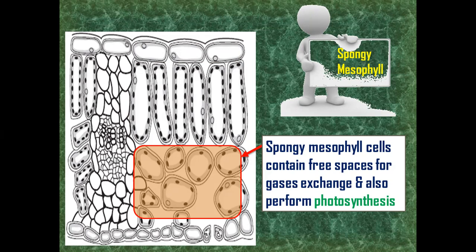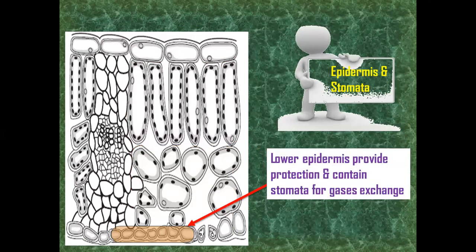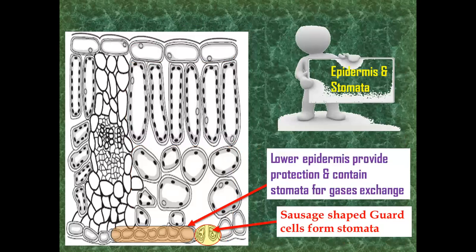Below the spongy mesophyll, we have lower epidermis. This lower epidermis, like upper epidermis, provides protection. But they contain stomata, and these stomata are formed by two sausage-shaped cells which are joined together and provide a way for gaseous exchange. The gases move through the stomata down their concentration gradient. For example, carbon dioxide moves from outside to inside, while oxygen, which is produced as a result of photosynthesis, is moving from inside to outside. And water in the form of vapor is evaporating from the surface of the stomata.